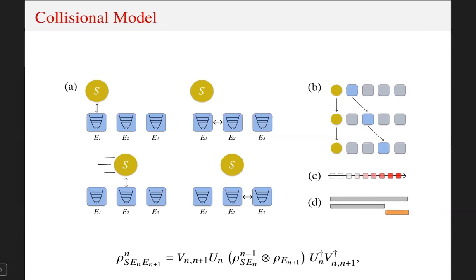The scheme would be something like this. We have our system S and the environment, the chain of units. The dynamics is as follows. The system first interacts with unit one. Then, before the system interacts with unit two, we make unit one and unit two interact. This way, unit two already will have information about the system, which gets through unit one.